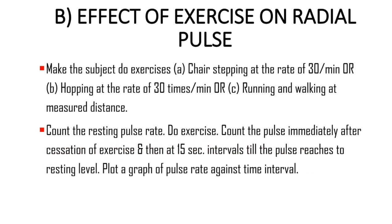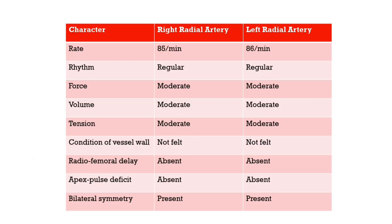Ask the subject to take rest for 15 seconds, bringing the time to the 30th second. Then once again start counting the pulse for another 15 seconds. By the end of the 45th second, note down the pulse rate. Once again, ask the subject to rest for 15 seconds, reaching the 60th second. Then count the pulse rate for another 15 seconds. Continue this pattern of 15 seconds counting and 15 seconds rest until the rate falls below or reaches the resting pulse rate. After that, plot a graph of the pulse rate obtained against the time interval.